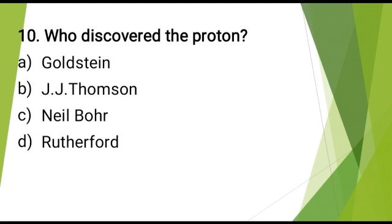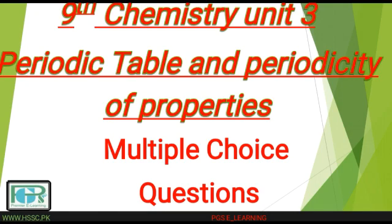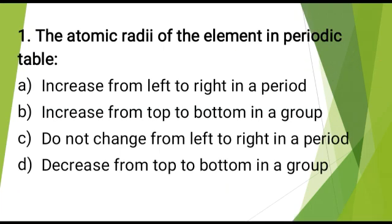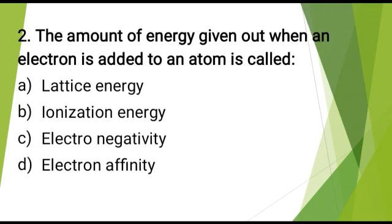Who discovered the proton? The correct answer is: Goldstein. The atomic radius of the element in the periodic table? The correct answer is: increases from top to bottom in a group. The amount of energy given out when an electron is added to an atom is called? The correct answer is: electron affinity.